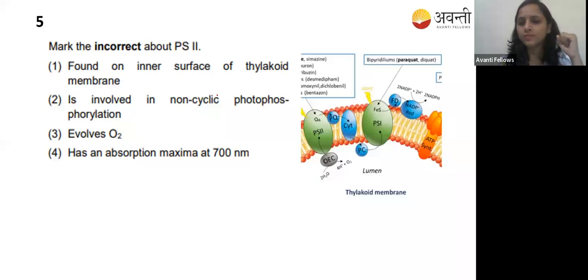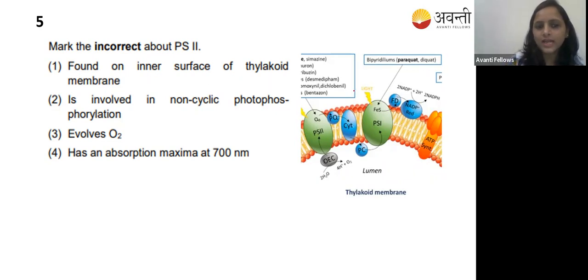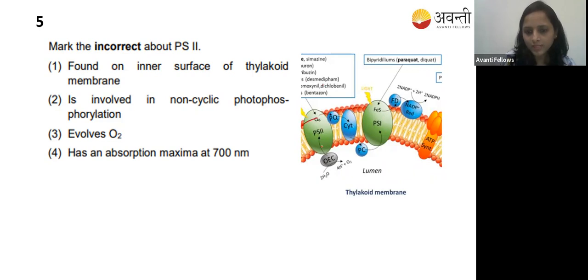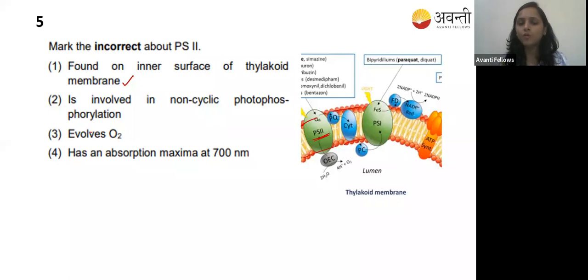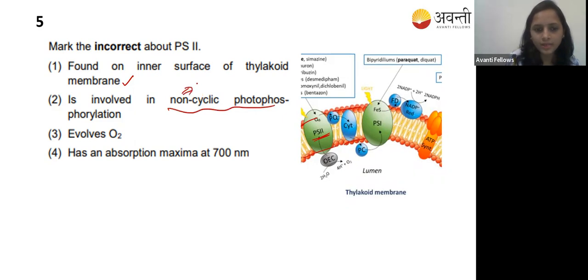Fifth question: mark the incorrect statement about photosystem 2, from photosynthesis in the thylakoid. Option one - found on the inner surface of the thylakoid membrane - yes, correct. Option two - is involved in non-cyclic photophosphorylation - yes, both photosystem 1 and photosystem 2 are involved in non-cyclic photophosphorylation. That is also correct.